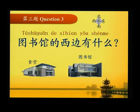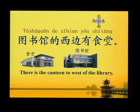第三题 Question three: 图书馆的西边有什么？ 答案是 — 图书馆的西边有食堂 — There is a canteen to the west of a library.